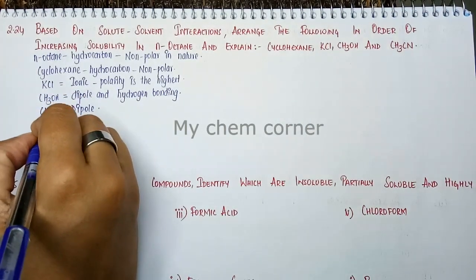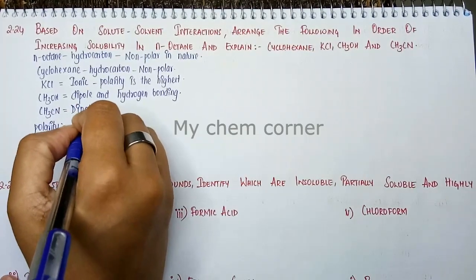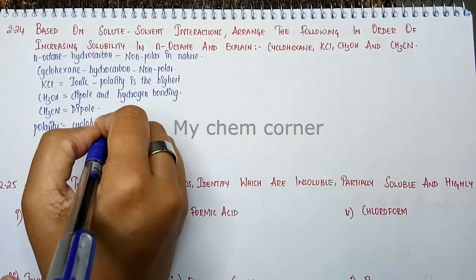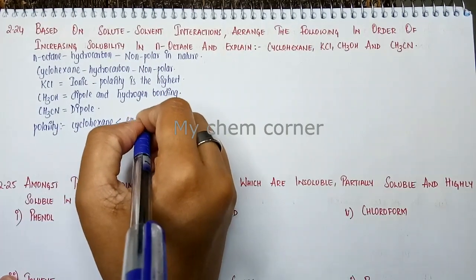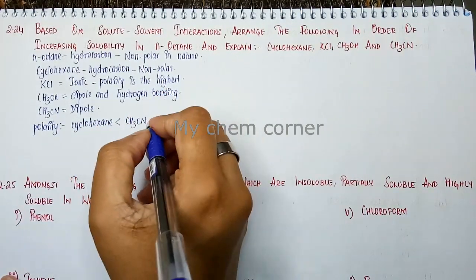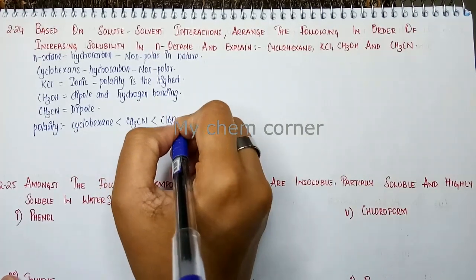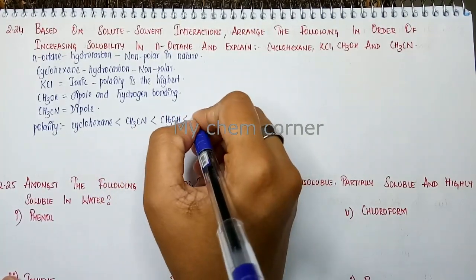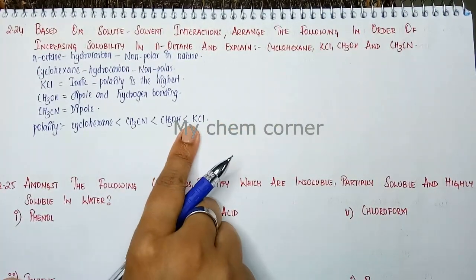Based on polarity, cyclohexene has the least polarity. After this, you have acetonitrile which has only a dipole moment, then CH3OH which has hydrogen bonding, and finally the ionic compound KCl, which has the highest polarity.